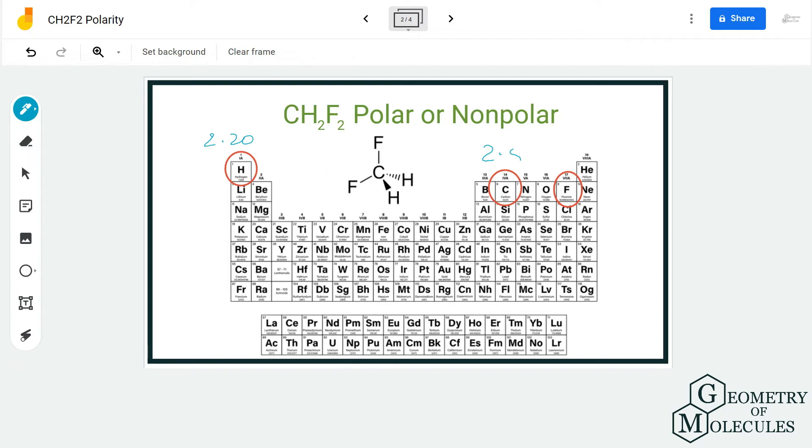when you look at fluorine's electronegativity and compare it with carbon and hydrogen, you will realize that the difference is much more than 0.4, as fluorine has an electronegativity value of 3.96. As there is a lot of